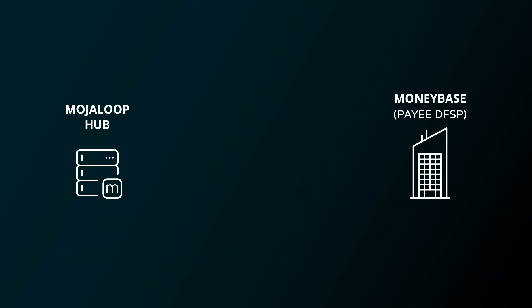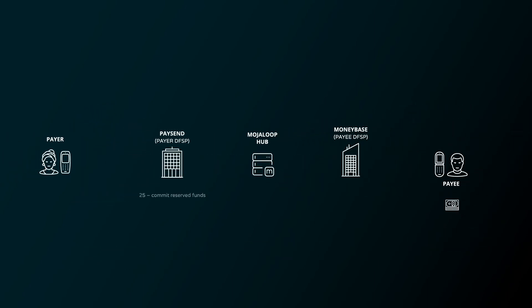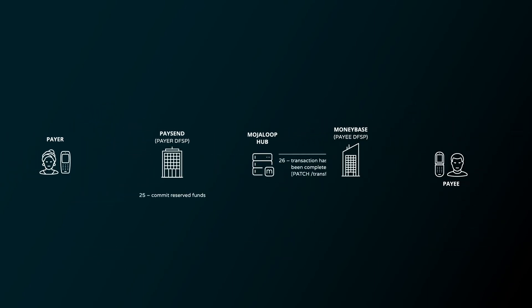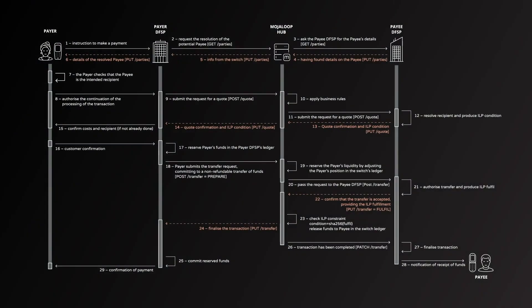With everything now ready and confirmed, Mojaloop notifies PaySend to go ahead with the transfer. PaySend accepts and completes the transaction. Mojaloop sends a similar notification to MoneyBase, which also accepts and finalizes the transaction. At this point, Gladys is told her payment has been carried out, and John is notified he has received a payment from Gladys and can use the funds. So there you have the specific functions that Mojaloop performs in order for users like Gladys and John to have a fast and simple experience of transferring money between each other.